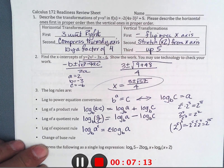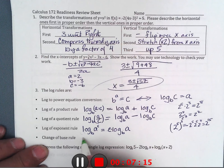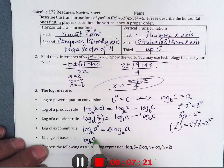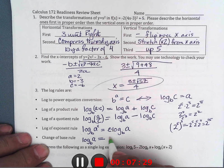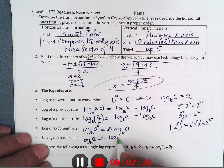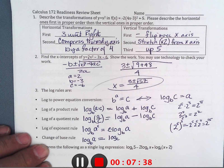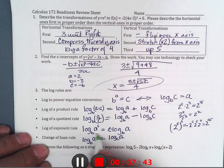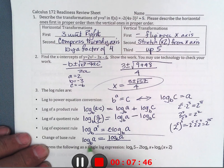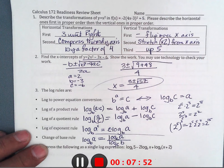The change of base rule says if you don't like the base you're in — like base b of a — and want to change to something more convenient like e or 10 for your calculator, you go to that base. So log base b of a becomes log base c of a over log base c of b, where c could be 10 or e.